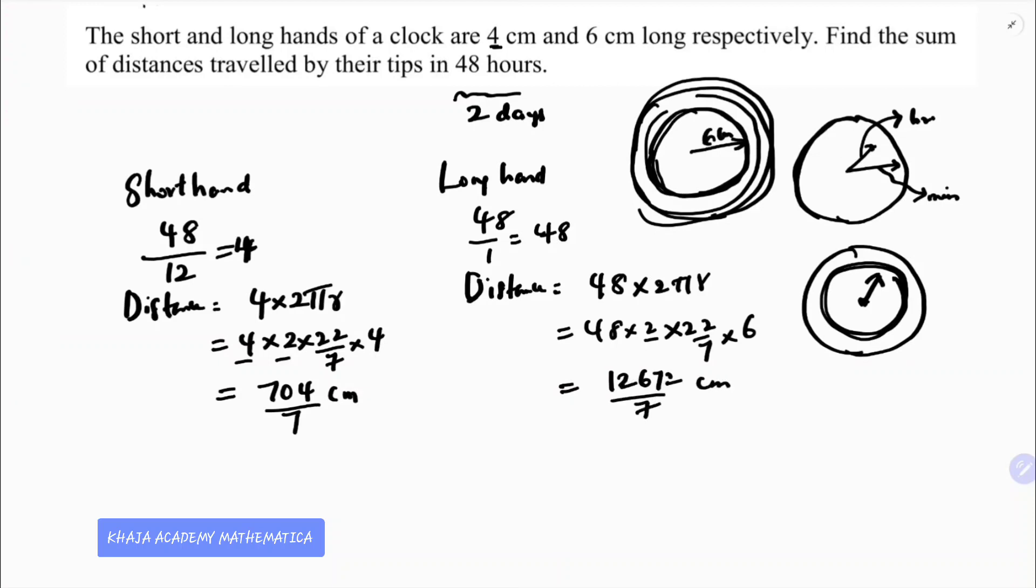Now we need to find the sum of both the distances traveled by the tips. The sum is 704 by 7 plus 12672 by 7. The LCM is the same.